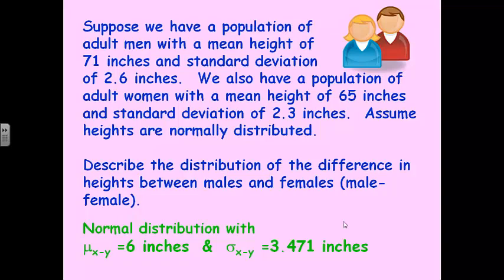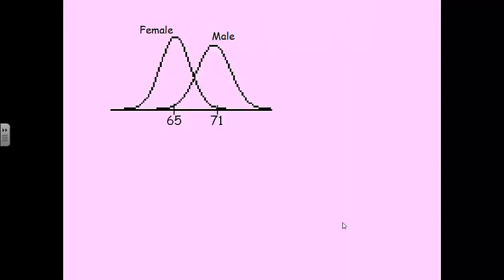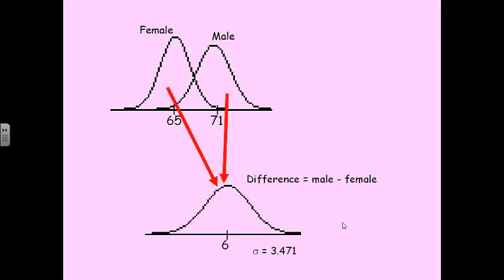So if we square 2.6, square 2.3, add them together, and take the square root, that gives us the standard deviation of the difference between males and females. Hopefully this rings a bell because we did this before. And here's our description — a nice little picture showing males, females, and if we subtract them we wind up getting a curve that looks like that.